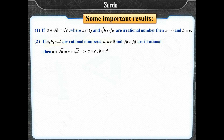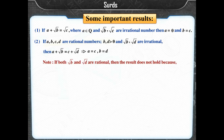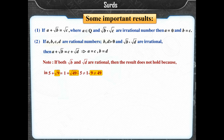Note: If both √B and √D are rational, then this result does not hold. For example, 5 + √9 = 1 + √49, but 5 ≠ 1 and 9 ≠ 49.